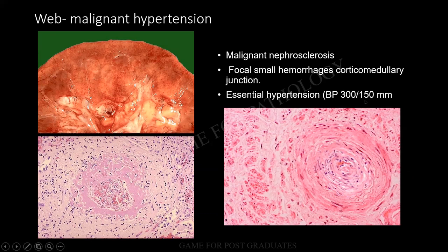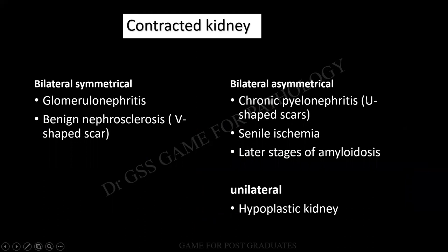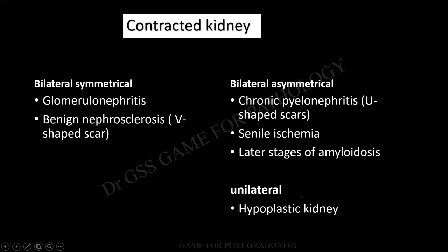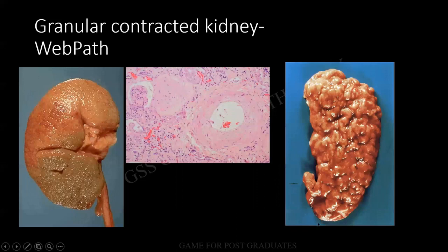Contracted kidney — this is what I had been telling you people earlier. Whether it is bilateral or unilateral. Bilateral means whether it is symmetrical or asymmetrical. If it is going to be symmetrical, think of glomerulonephritis, nephrosclerosis. There will be a V-shaped scar that can be seen. And in the case of pyelonephritis, there can be a U-shaped scar. Renal ischemia. Later stages of amyloidosis — amyloidosis it is enlarged, but later on there is fibrosis, there is contraction. If it is going to be unilateral, it can be a unilateral obstruction or it can be a hypoplastic kidney. This is the case of a benign nephrosclerosis. Fine granular contractions are there and it is bilateral symmetrical. And look at the pyelonephritis — you will be able to appreciate the difference. And there can be a thickening of the vessel wall. There can be sclerosis of the glomeruli seen in a case of glomerulonephritis.